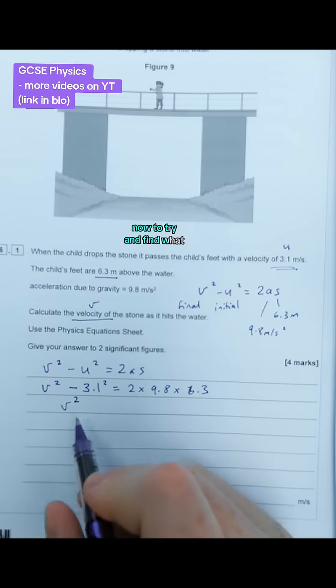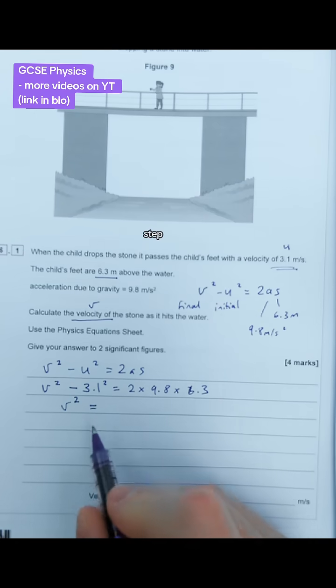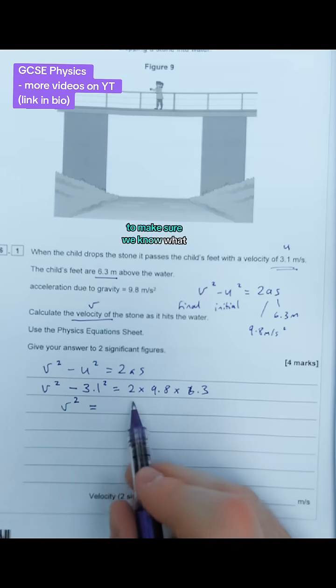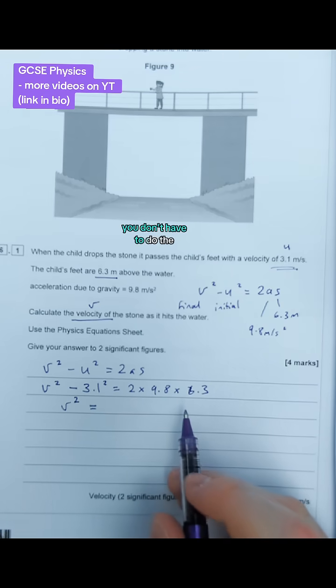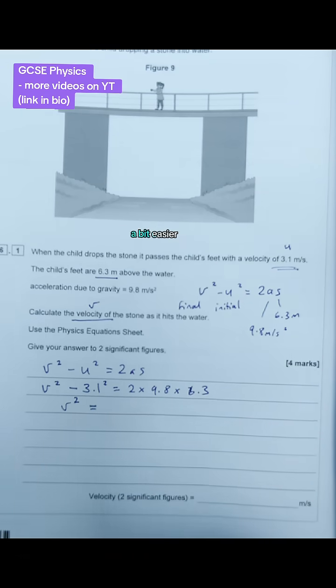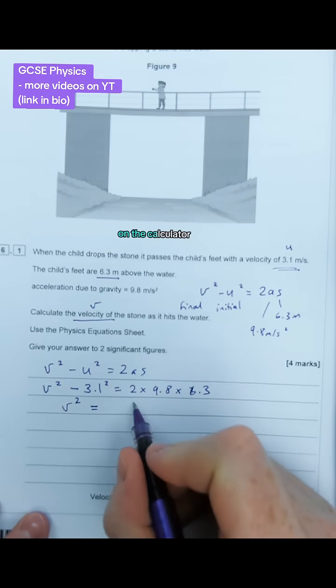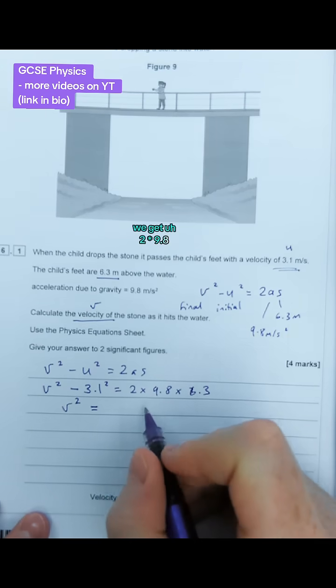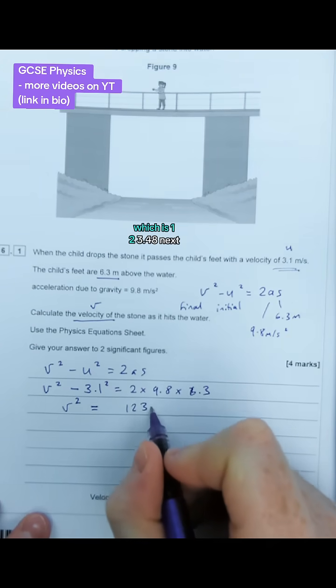Now, to find what v² is, I always take an extra step to make sure we know what we're doing. I would times these all together first. You don't have to do this step, but I think it makes things easier. Putting those numbers in the calculator, we get 2 times 9.8 times 6.3, which is 123.48.